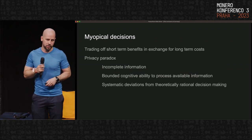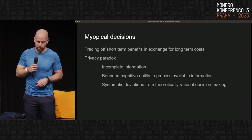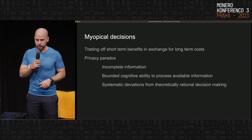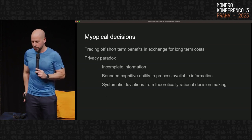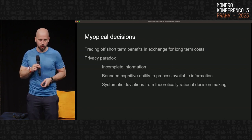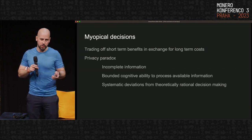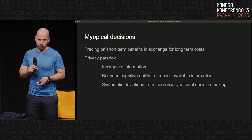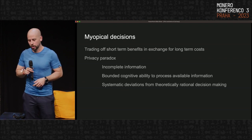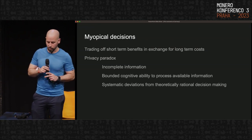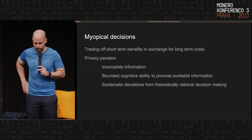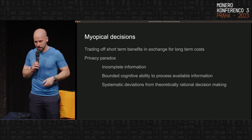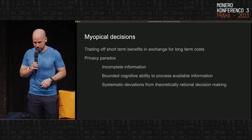A final point often made concerns myopic decisions: when people sell or give away their data, they are trading short-term benefits — like using Google's system — in exchange for long-term costs, namely that their data is no longer in their hands. This also leads to the privacy paradox, which I won't go into too much given time constraints, but we can discuss it afterwards.